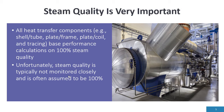Heat transfer components — plate and frame, plate coil, tracing — base their performance calculations on 100% steam quality. Everything is based on 100% steam quality. Unfortunately, steam quality typically is not monitored closely, or not even monitored in plant operations, and we always assume it's 100%. The steam coming off a saturated boiler is not 100% — it's close, maybe 98.5% or 99%, but not 100%. As steam travels through the system, steam quality will start to degrade, and that's why we need to know what quality the steam is at.